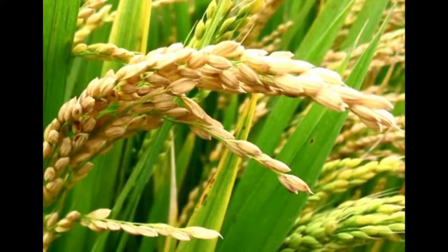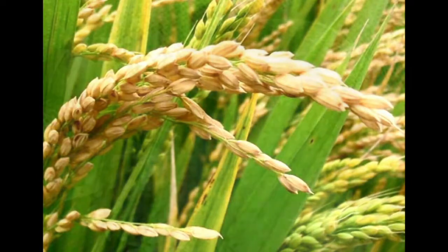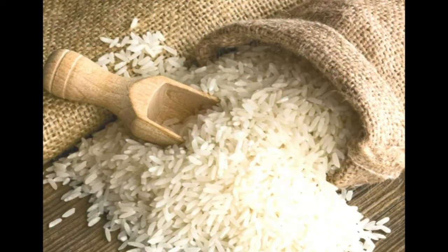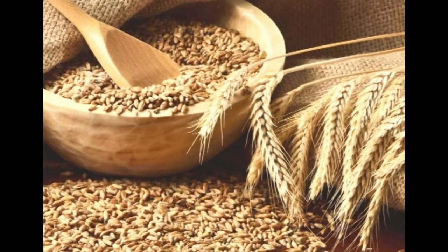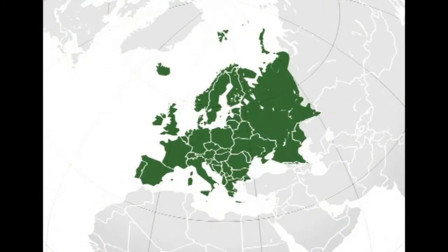Different types of cereals are grown in different climatic conditions. For example, rice is grown in the subtropical and tropical areas of the world like Asia. Whereas wheat is grown in the temperate regions of the world, and oats and rye are grown in the northern and eastern European regions.